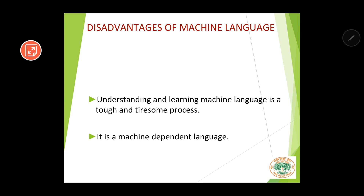The second disadvantage is that it is a machine dependent language. For different computers, the machine language codes will be different. For example, if you have learned machine language for one computer and then purchase a different computer, you have to learn a different type of machine language. It will still be made up of zeros and ones, but the codes will be different. Machine dependent language means that for different machines, you have to learn different codes.